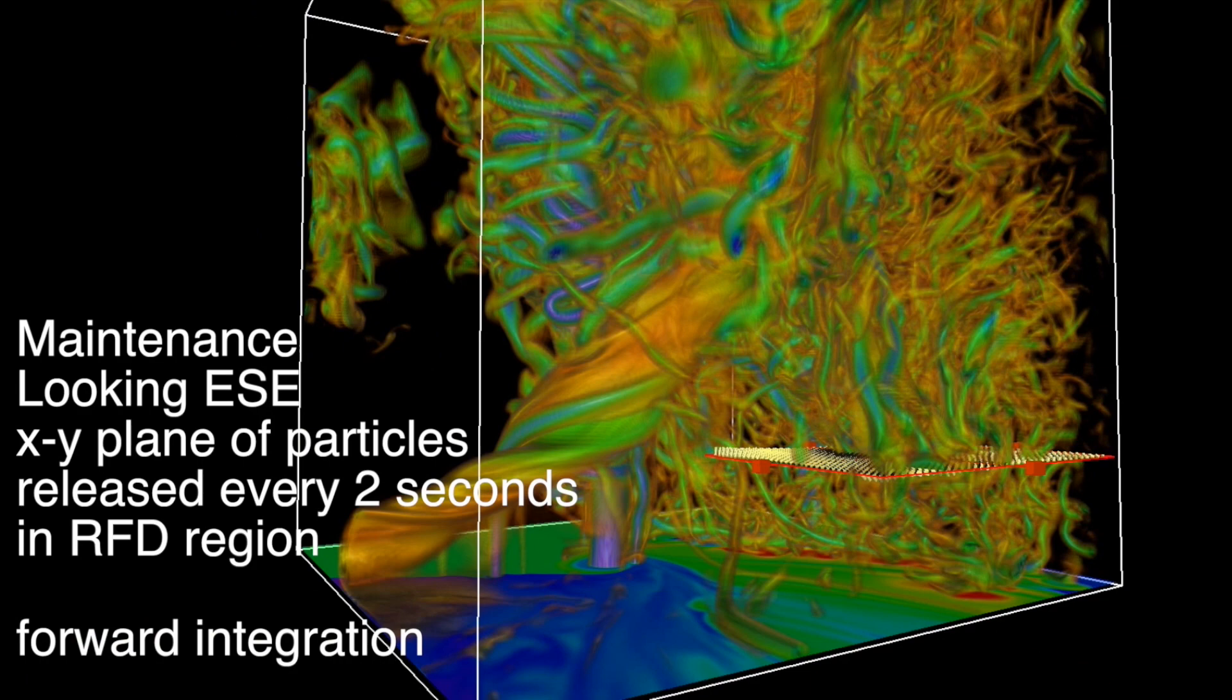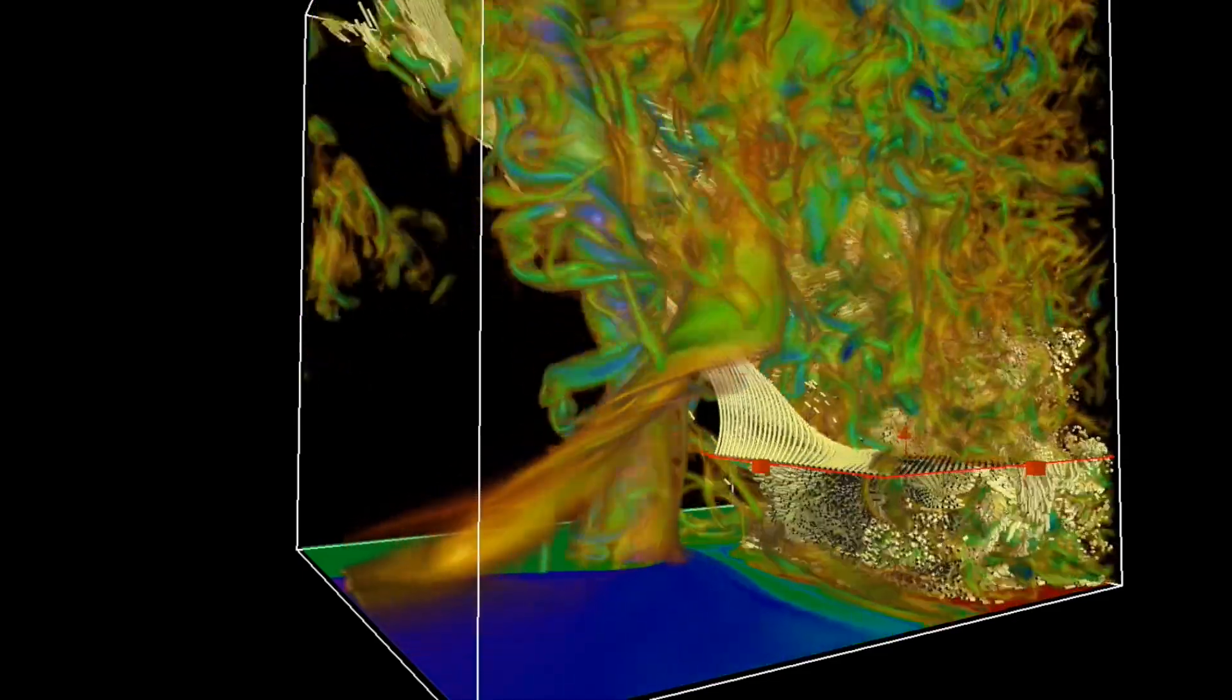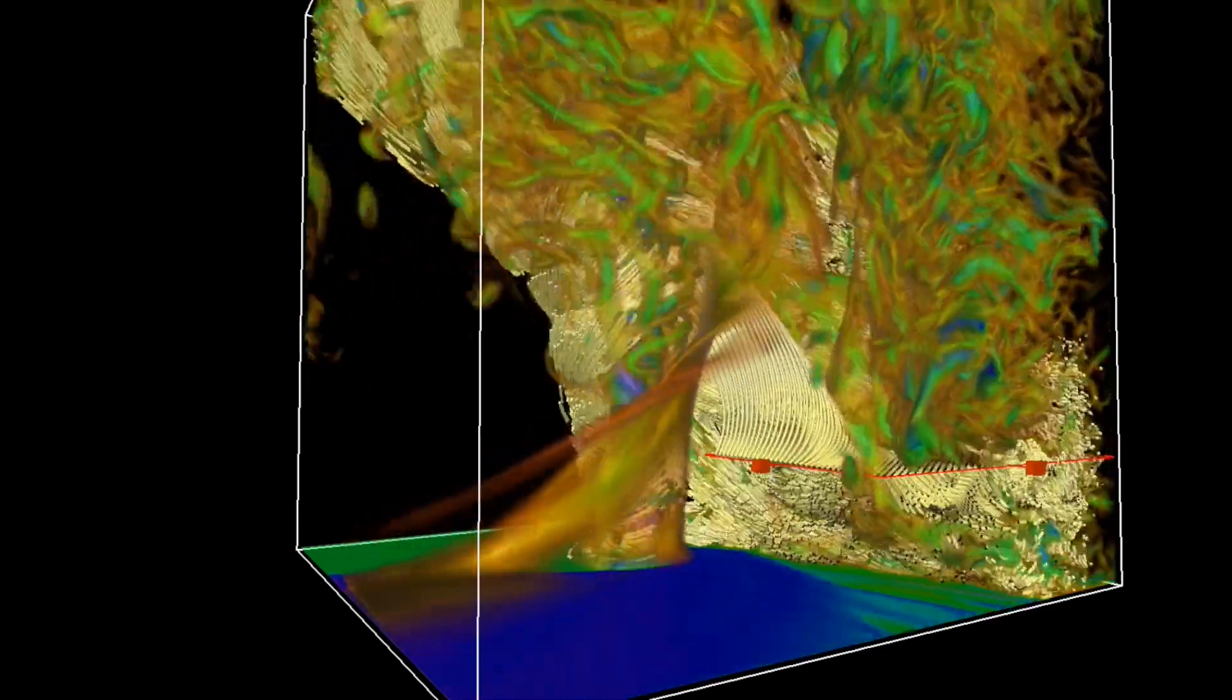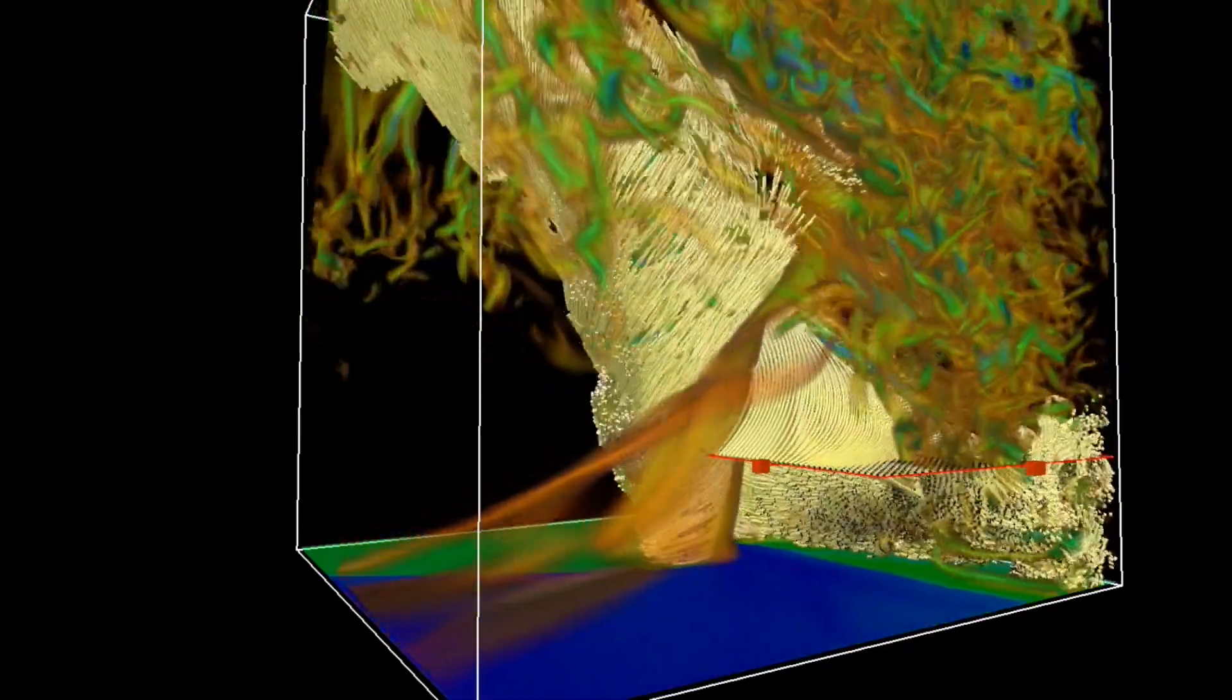Here I'm going to drop particles in what's called the rear flank downdraft of the storm. And just to see where the air goes, this is kind of turbulent. But pretty much this updraft is so strong, eventually almost all particles are going to end up in the updraft. It just might take a somewhat circuitous route.